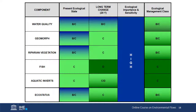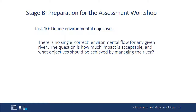Task ten is defining the environmental objectives. There is no single correct environmental flow for any given river. The question is how much impact is acceptable and what goods and services the various stakeholders expect from the river, and what objectives could or should be achieved by managing it.